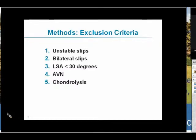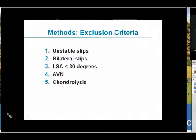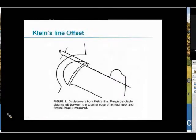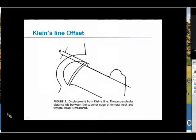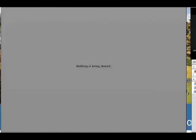We should all be familiar with the lateral slip angle of Southwick. It's essentially a line from the anterior to posterior tips of the epiphysis; you draw a perpendicular to that and the angle is subtended by a line going up the shaft. Normal is about 12 degrees, mild less than 30, moderate 30 to 50, severe greater than 50. The alpha angle of Nötzli is a radiographic measurement of impingement and should be less than 55 degrees. Klein's line offset is a surrogate radiographic marker of the femoral head-neck offset — it measures the distance between a tangential line up the femoral neck and the most lateral part of the equatorial region of the head, giving a distance representing the femoral head-to-neck offset.